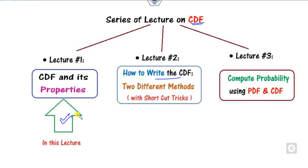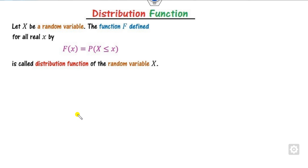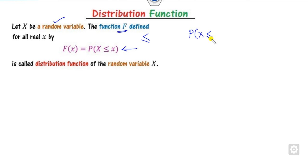Now, if you have any random variable x, then a function capital F is said to be a distribution function if it is defined as shown here. The most important thing in this definition is that it should use the less-than-or-equal sign. For example, if I say probability of x less than or equal to 3, since it includes both less-than and equality, I can write this as F of 3.